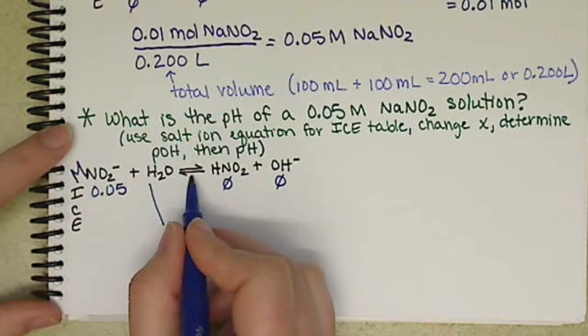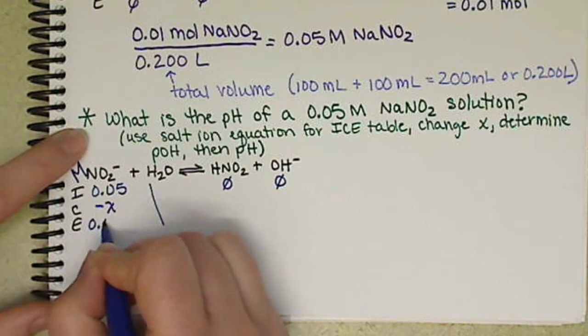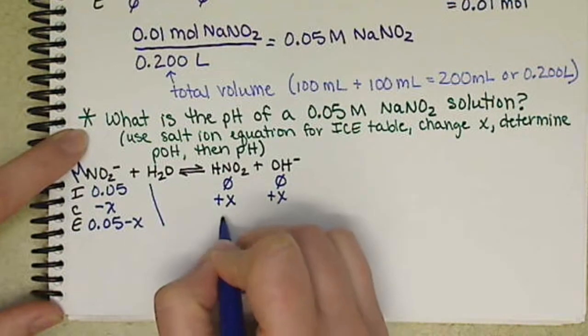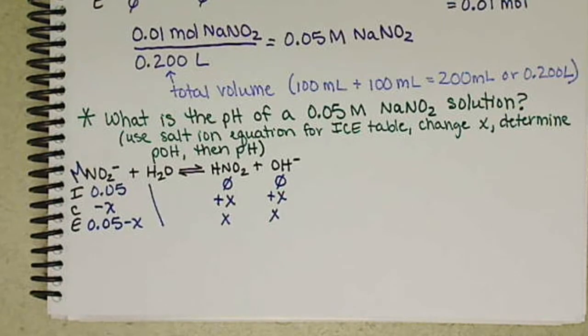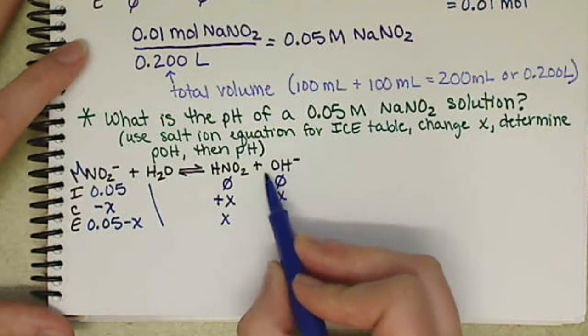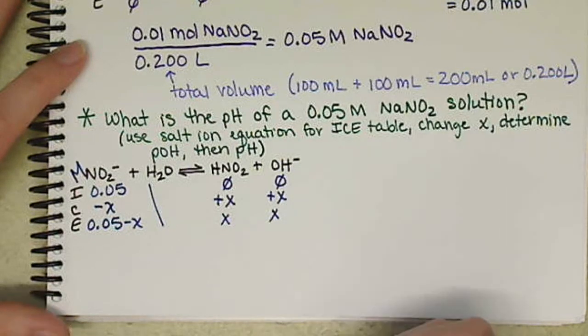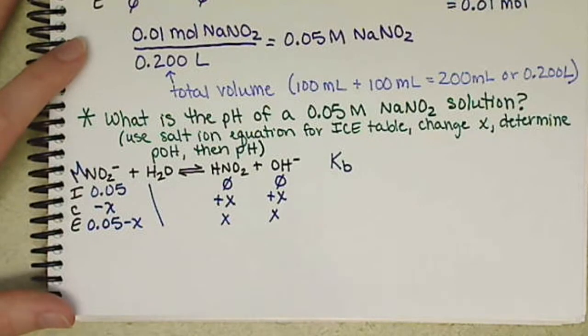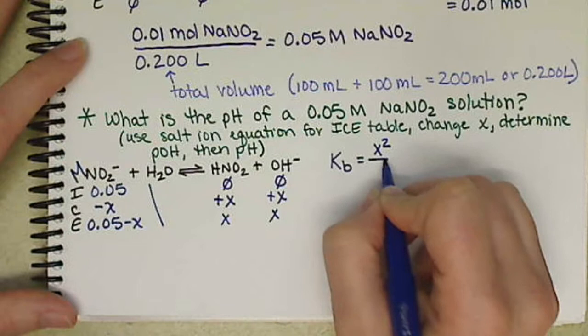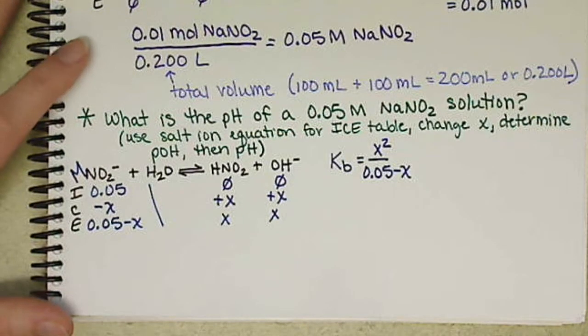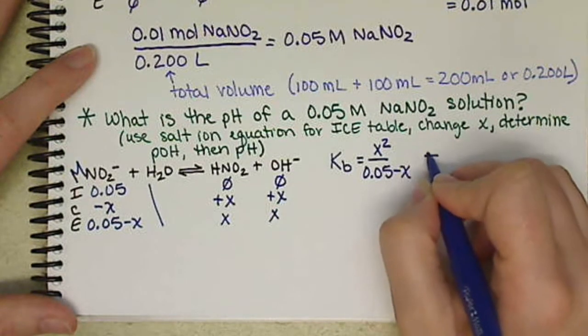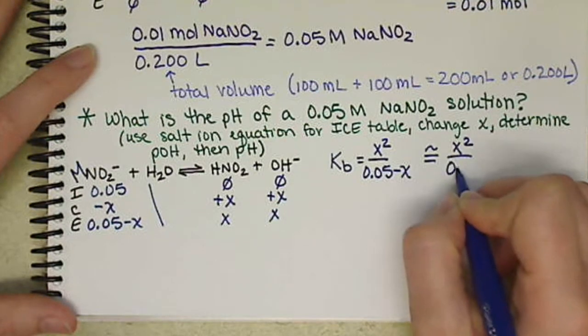Our change is unknown. We're in equilibrium. So it's going to be minus x and plus x and plus x. And now we are going to set up our equilibrium constant expression and solve that for x. And the first question to ask ourselves is are we going to use Ka or Kb? So the answer is we want to use Kb because we are producing hydroxide ions. So this is acting as a base. So we have a Kb expression. We get x squared divided by 0.05 minus x. And we can make our assumption so that this is approximately equal to x squared divided by 0.05.